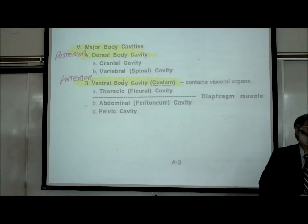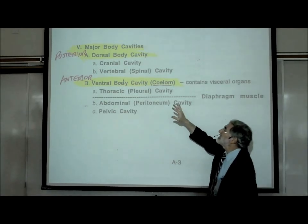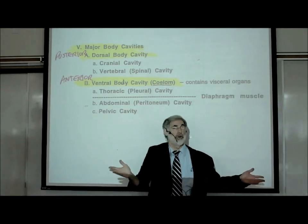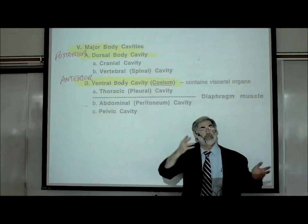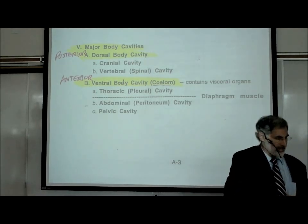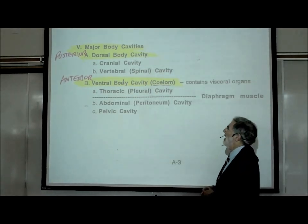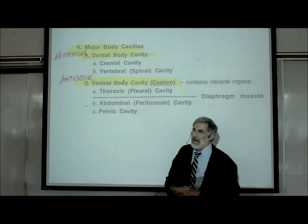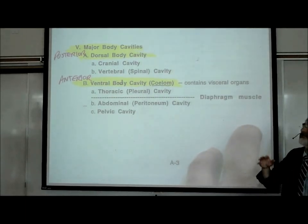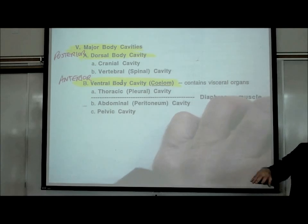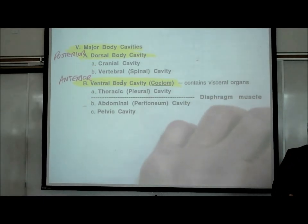A synonym for thoracic is pleural; a synonym for abdominal is peritoneal. The lab manual has color pictures of body cavities. Let's look at page A5 to help understand this. Whatever pictures I give you, you've got better color pictures in your lab manual.